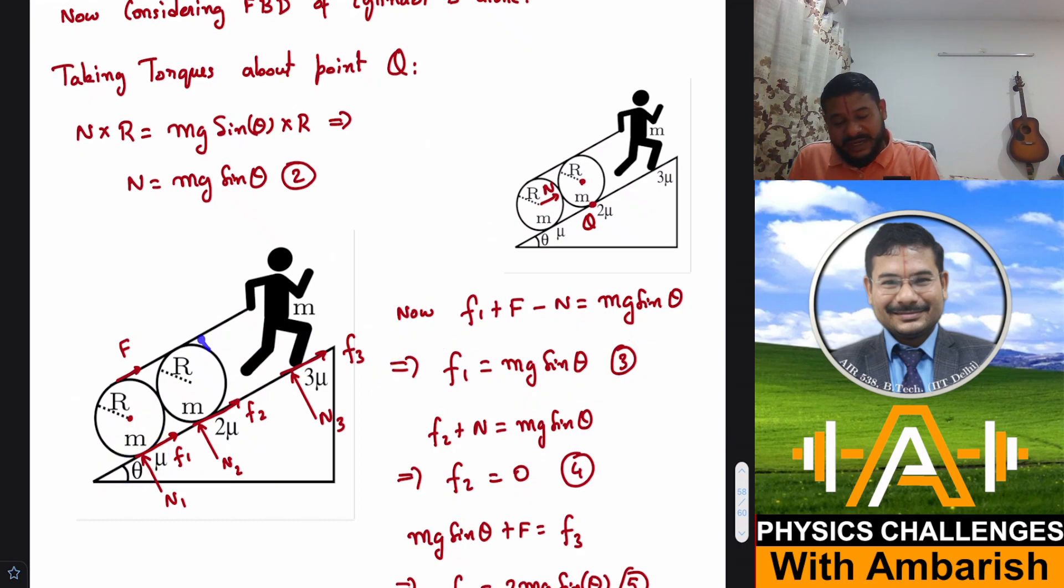Now for the second roller, there's normal reaction in this direction and F2 friction in this direction. F2 plus N should balance mg sin θ. That gives you F2 equal to 0, surprisingly. No friction here, just the normal reaction is sufficient to keep it balanced.